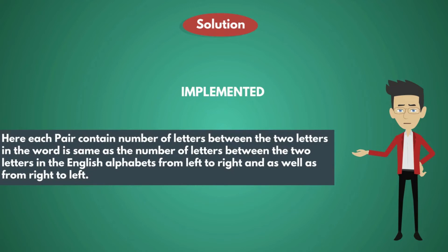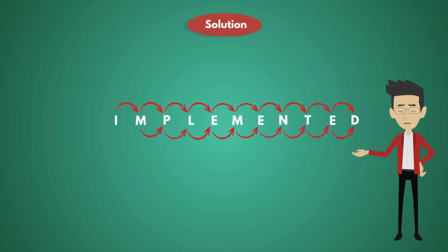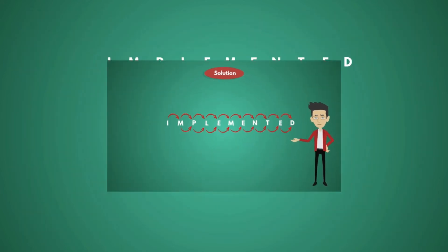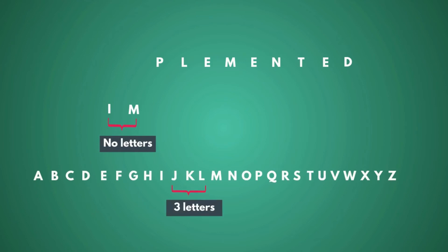We have to check each and every letter with other letters in the word. Take the pair I-M: there are no letters between I and M in the given word, but in the English alphabet there are three letters between I and M. The number of letters between I and M are not the same in the word and the alphabet, so this is not a valid pair.